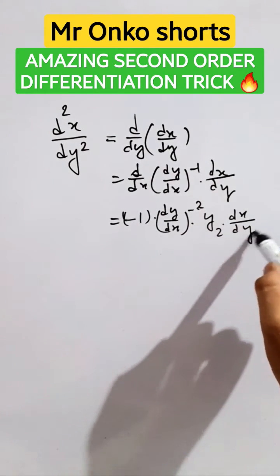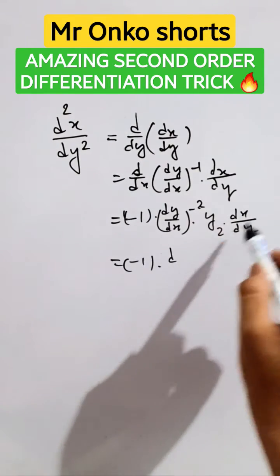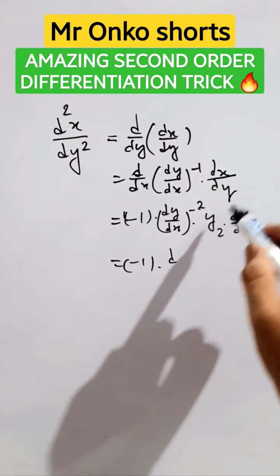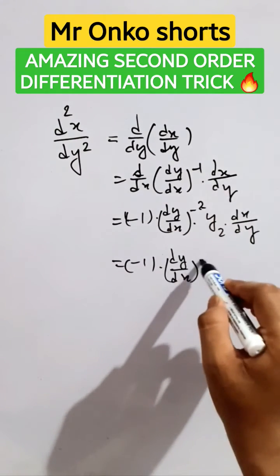Now minus one into this can be written as dy/dx raised to the power minus one, and here it is minus two, so it will be dy/dx raised to the power minus three into y₂.